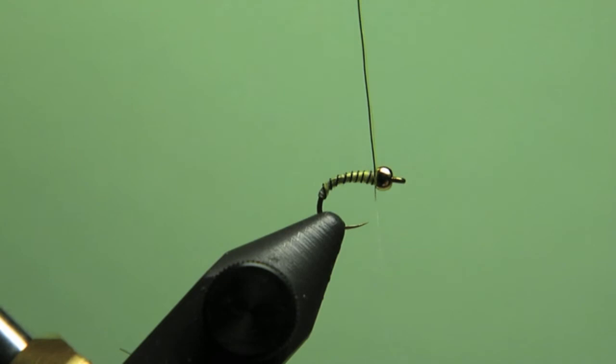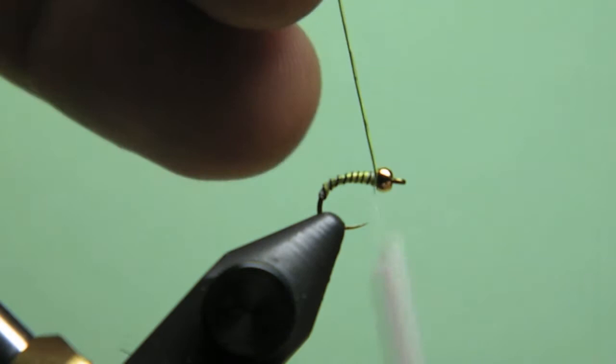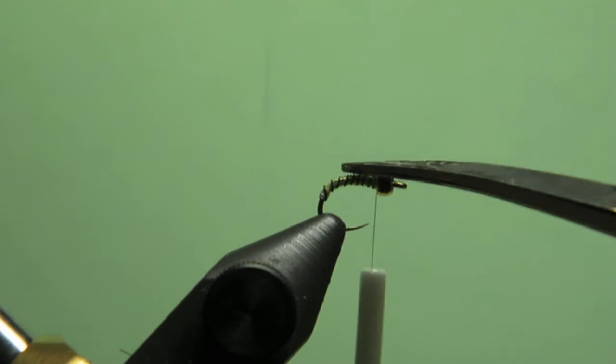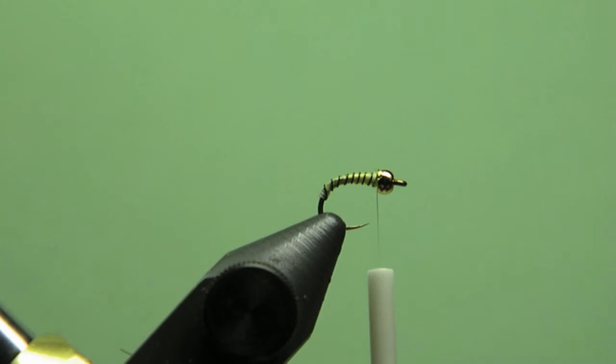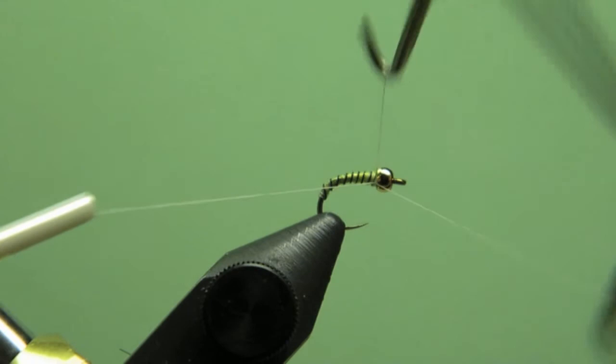So I'm good to go, looks good. Do a little snip snip. Perfect, midge's looking good. Next, come through with a quick little whip finish behind the eye. Easy, easy. And you're good.